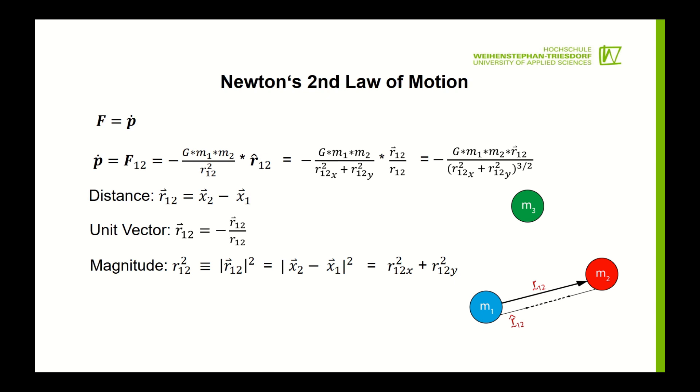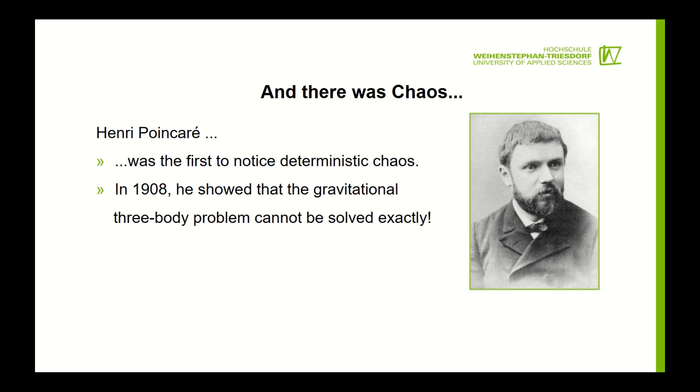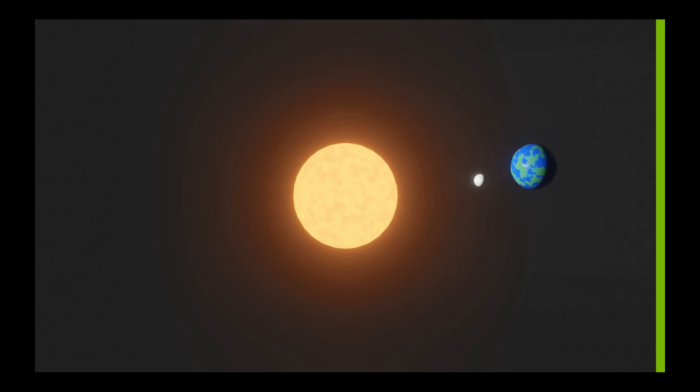Henri Poincaré was the first to notice deterministic chaos. It is called deterministic chaos since it isn't chaos in itself but rather the extreme change of output parameters when the input changes by a very small amount. The three-body problem describes the motion of three-point mass particles under the mutual gravitational interactions.